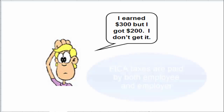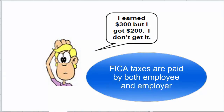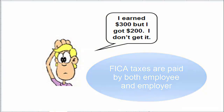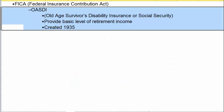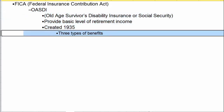FICA taxes are paid by both the employee and the employer. FICA is made up of two pieces most people know by the names Social Security and Medicare. FICA stands for Federal Insurance Contribution Act, and the biggest piece is OASDI — Old Age Survivors Disability Insurance — commonly called Social Security. It was created in 1935 and is intended to provide a basic level of retirement income.